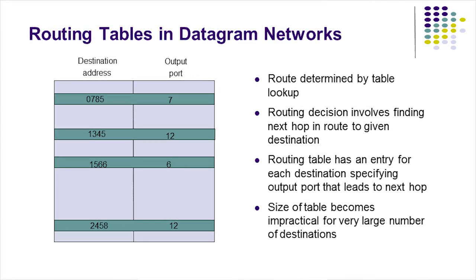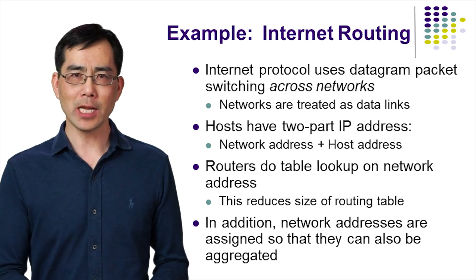The figure shows a routing table for a datagram network. Each table contains an entry for each possible destination in the network. Each entry specifies the next hop to be taken by packets with the associated destination. When a packet arrives, the route is determined by table lookup. The problem is, when the number of destinations becomes very large, the size of the routing table may exceed the practical implementation limit.